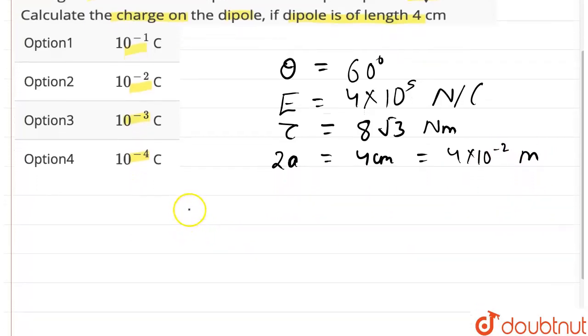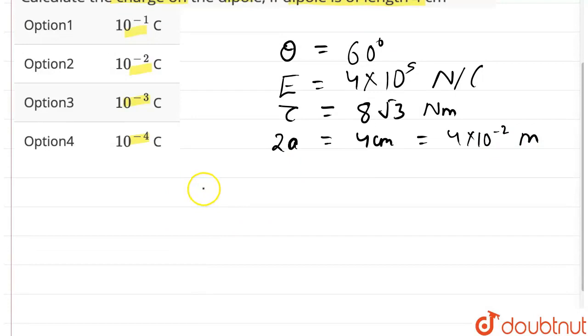Now, as we know, when we place a dipole in an electric field, it experiences a torque. This torque is given by τ = PE sin θ.